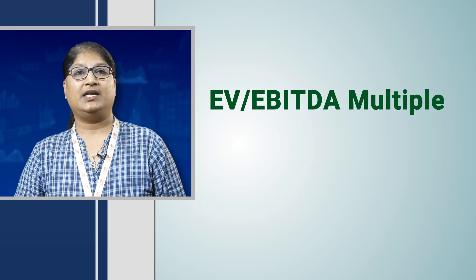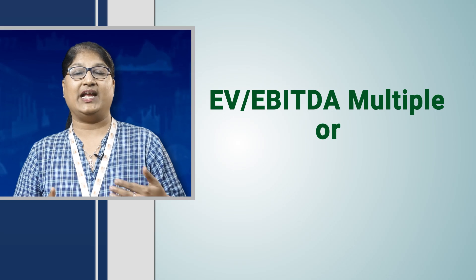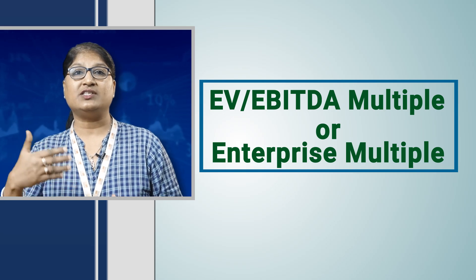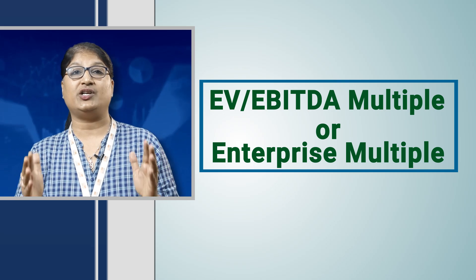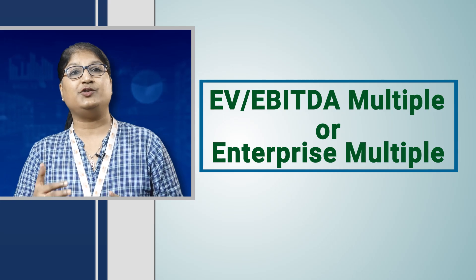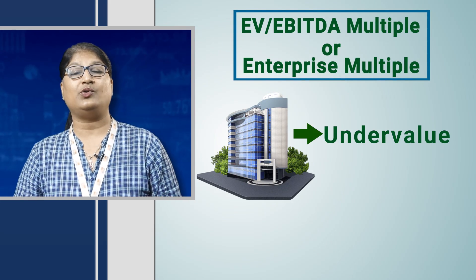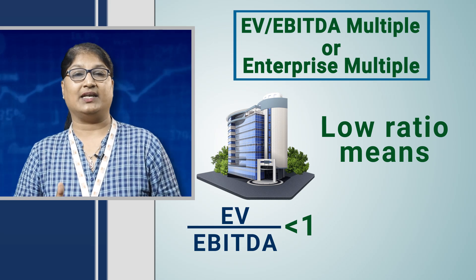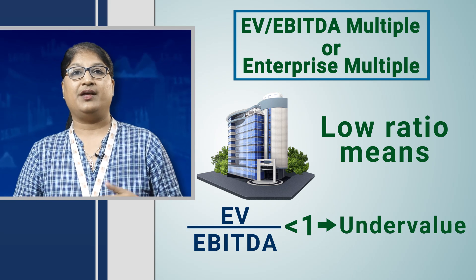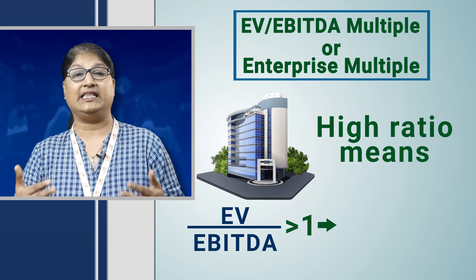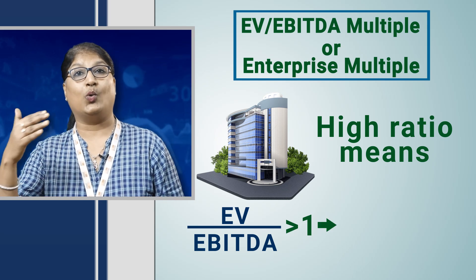Today let us understand the EV to EBITDA multiple. EV to EBITDA, or the enterprise multiple, is used to determine the value of a company. It looks at a firm the way a potential acquirer would, considering the company's books. It is used to see whether a company is undervalued or overvalued — a low ratio means the company is undervalued, while a high ratio means it is overvalued.